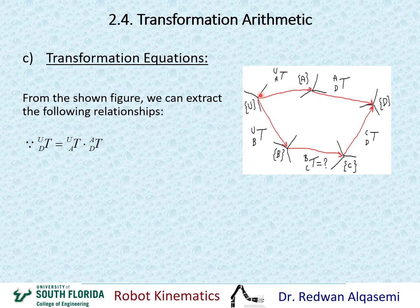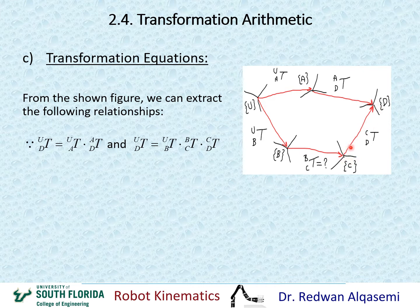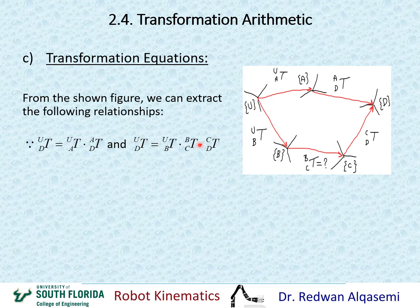We can go this route, or we can also go this alternative route. It can also be equal to T of B relative to U, multiplied by T of C relative to B, and that multiplied by T of D relative to C. Both of these are equal — whether you go from here to here using the upper route, or from here to here using the lower route.